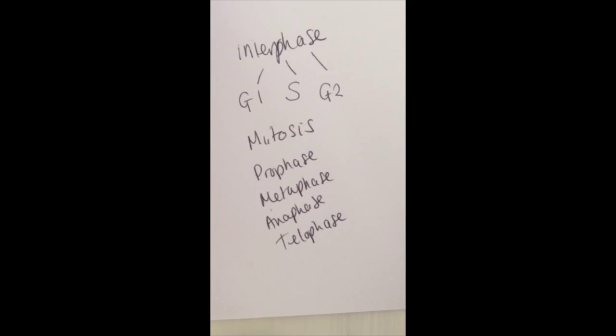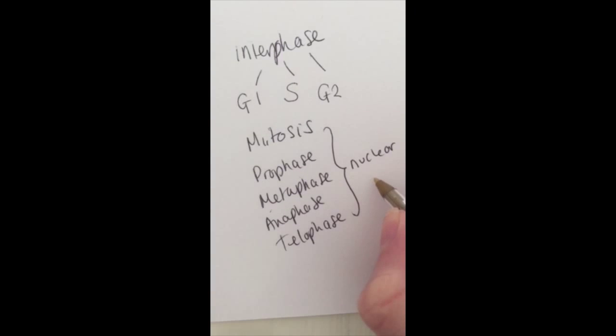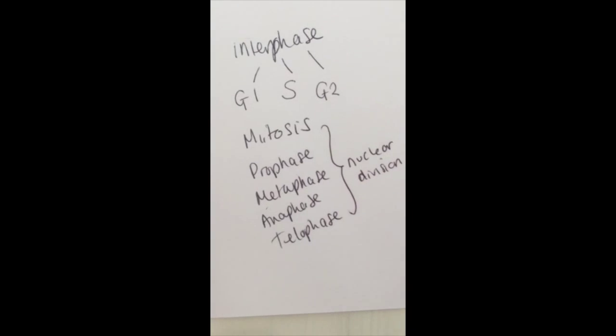And then finally, if you go through interphase and then through mitosis, so interphase is getting the cell ready and doubling the DNA, then in mitosis we've got the splitting of the nucleus or nuclear division. And then to actually divide the cell, we have cytokinesis, and that provides two identical cells. Because it's a cycle, we can go back to the beginning.